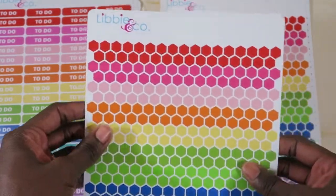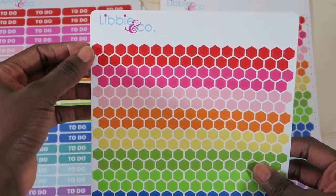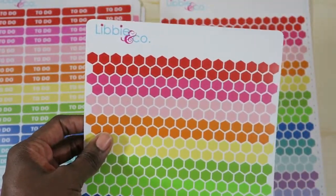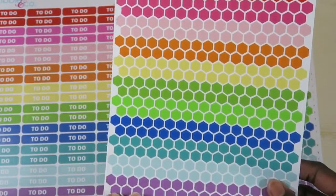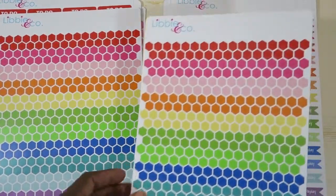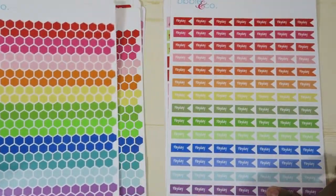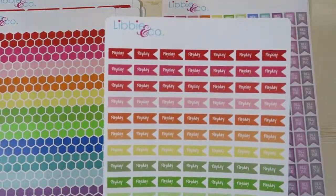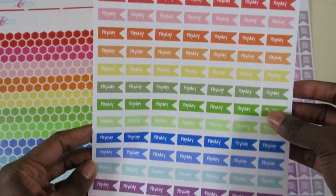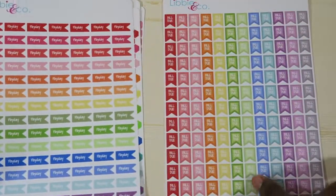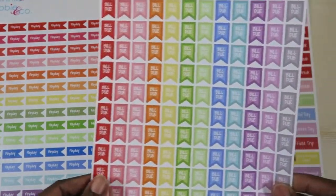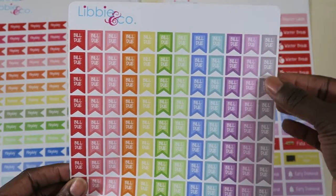Their monthly goals pages are all full of large hexagons, so I thought these would be a nice touch. We got two sheets of those, these payday stickers—just functional stickers, same color scheme. You get quite a few on here and then one sheet of bill due. These are cute too; I love the gray.